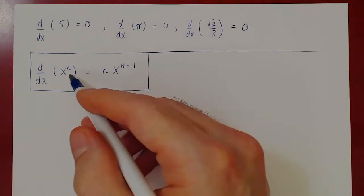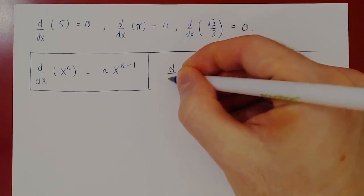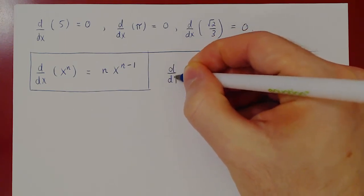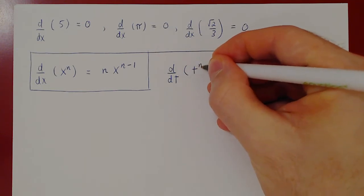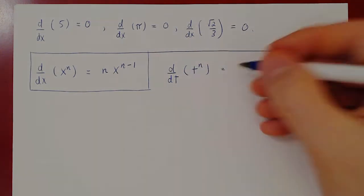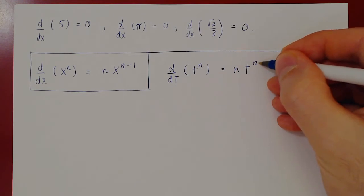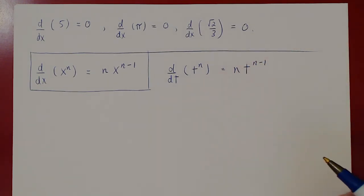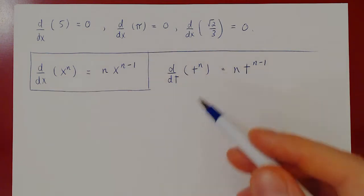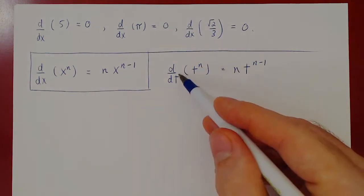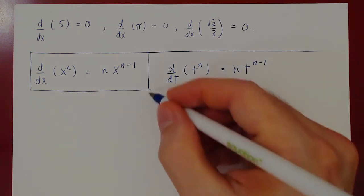You can replace x by any other variable. For example, you could differentiate with respect to t: if the function is t to the n, you get n times t to the n minus 1. So x is an arbitrary choice of variable — you can change it to t, u, or any other variable of your choice.